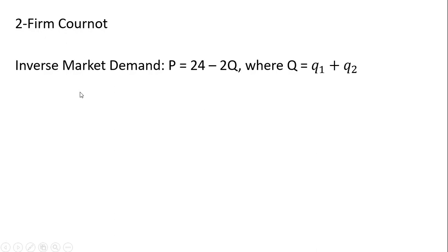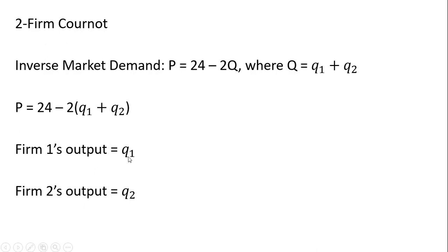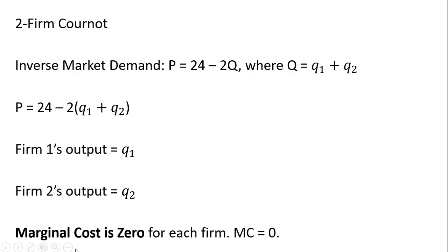Here we have a two-firm Cournot. The inverse market demand is given by the following, where the output uppercase Q is the output of firm 1 plus the output of firm 2. Substituting in Q₁ plus Q₂ for uppercase Q, we can rewrite our inverse market demand as follows. As mentioned, the marginal cost is zero for each firm, so MC equals zero.